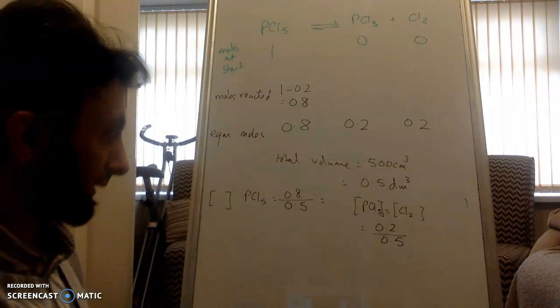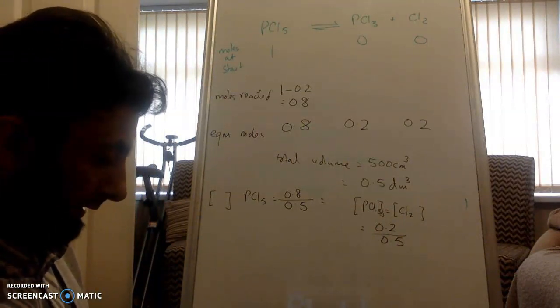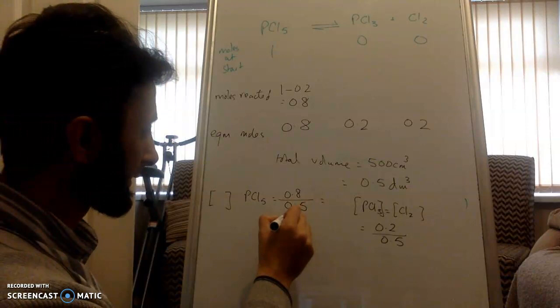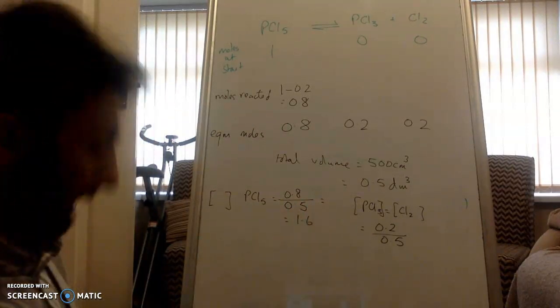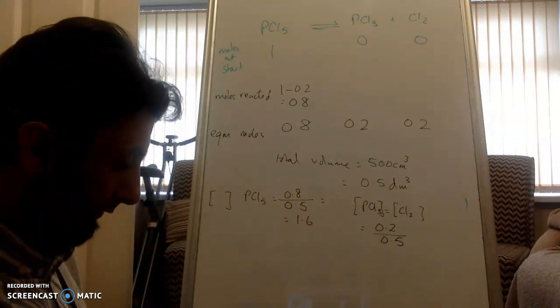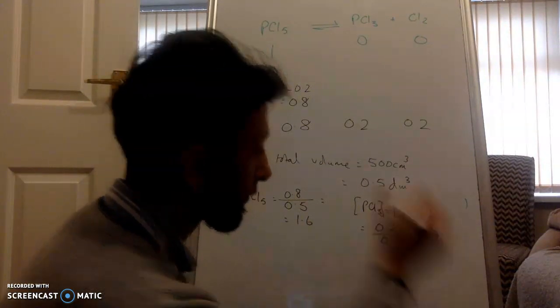Let's work this out. 0.8 divided by 0.5 is 1.6. And 0.2 divided by 0.5 is 0.4.